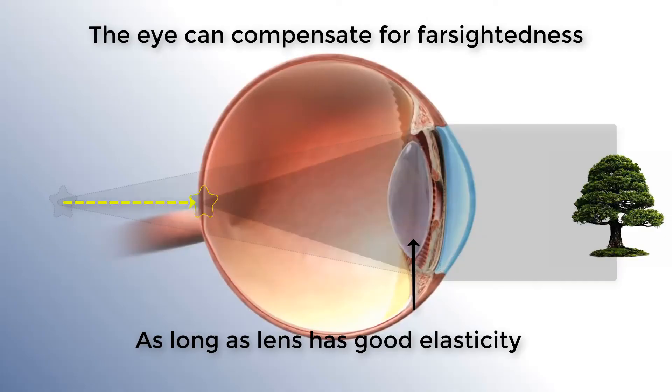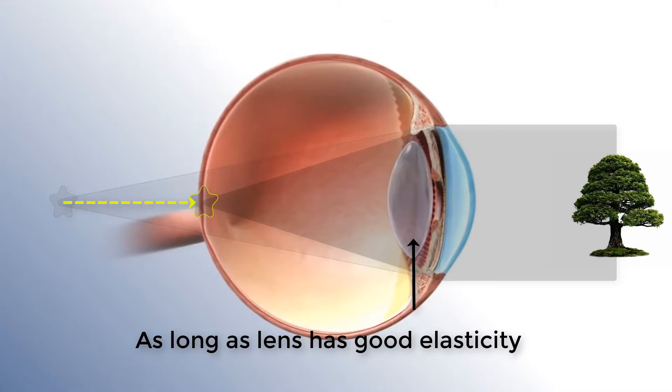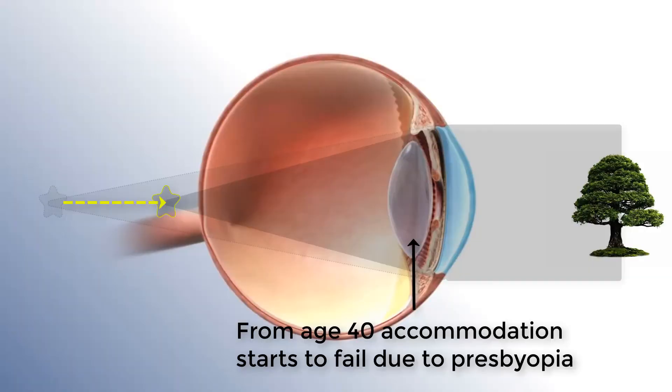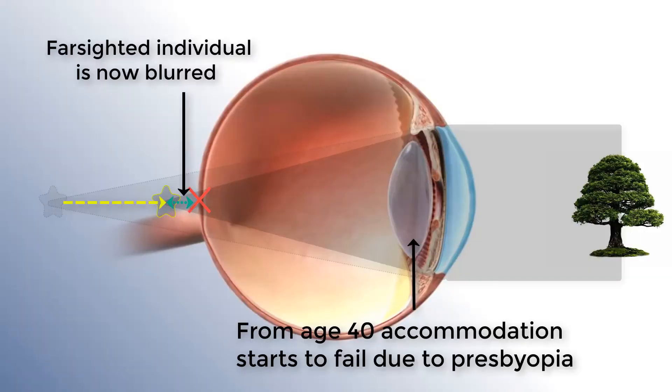If you're farsighted and under the age of 40, and you've got a prescription of about plus two or less, you can generally focus well at all distances. So the term farsightedness may not make any sense to you whatsoever. On the other hand, if you're over 40 and farsighted, you may find the opposite is true — you may not be able to see well for close up things or things very far away. Around age 40, we start to have problems focusing close up, which affects our ability to compensate for our farsightedness, causing a double whammy at that stage in life.